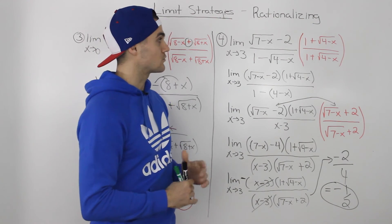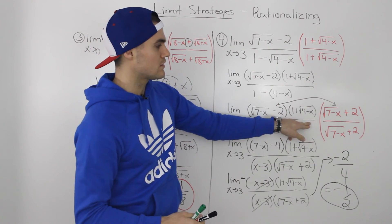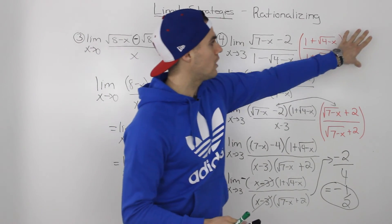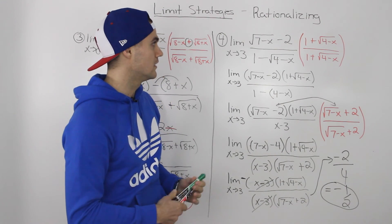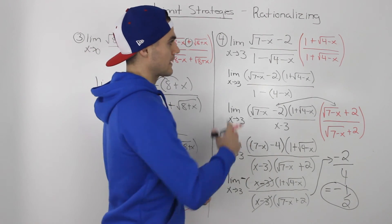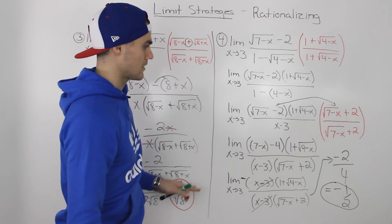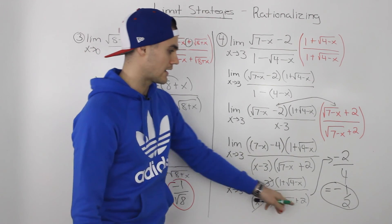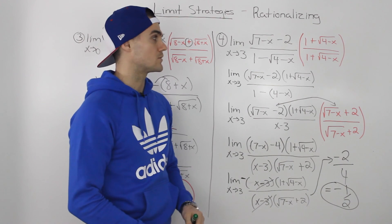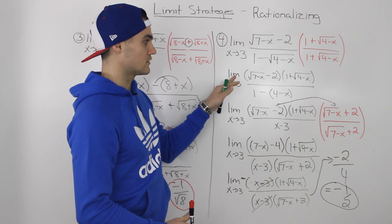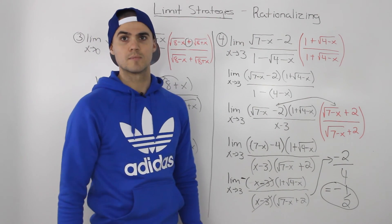Notice how we had to rationalize both the denominator and the numerator. You could have done it all at once, but I wanted to show it in a series of steps so you understand it better. You could have multiplied both conjugates at the beginning and gotten the answer faster — but again, I just wanted to show it to you step by step. This question is really challenging and it's about as hard as it gets for rationalizing limits.